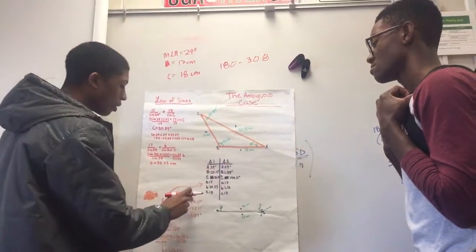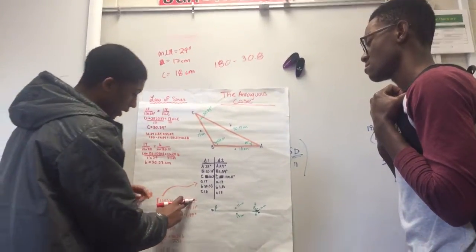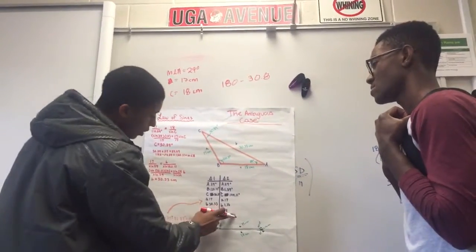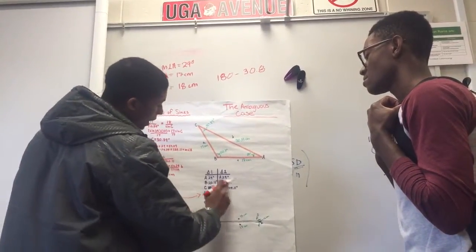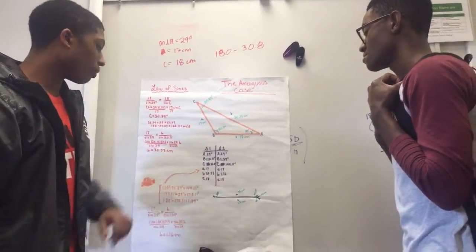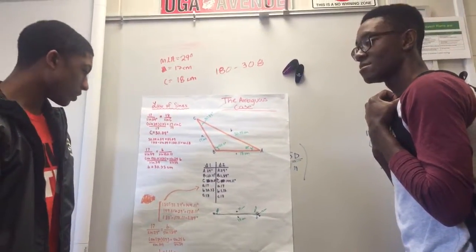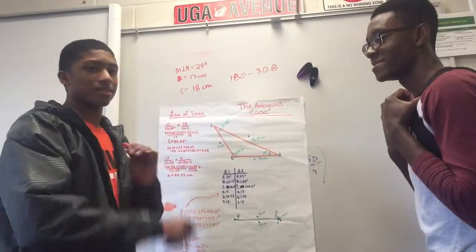And just like we moved these two over, the side lengths move over. And so now, all we need to do is solve for side length B. And so, set up your law of sines and solve for side length B, which is 1.16. Any questions? Yes sir. Alright, class dismissed.